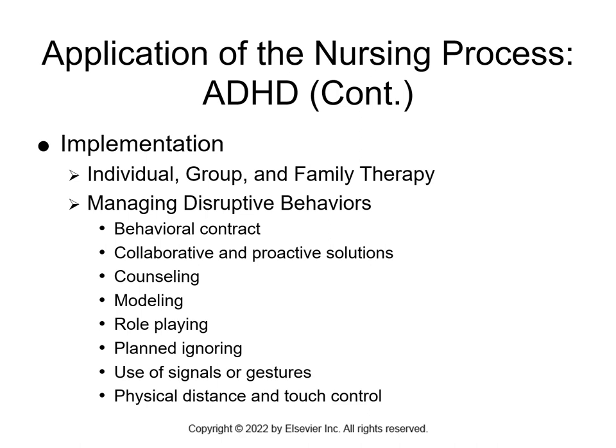To manage disruptive behaviors, we use a behavioral contract. For example, if someone has had 15 speeding tickets, a behavioral contract would require them to promise not to drive fast anymore — they are contracting to stop the behavior, meaning they won't get speeding tickets anymore.